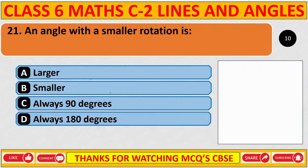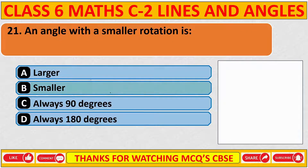An angle with a smaller rotation is? The correct answer is B: smaller.